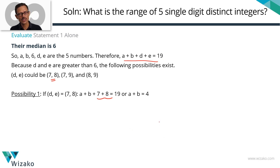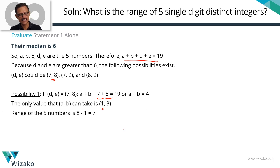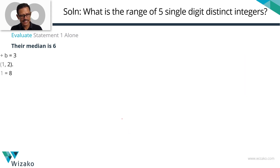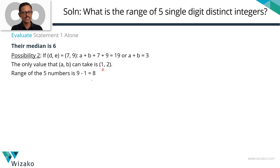Since the total sum is 25 and c + d + e = 21, we get a + b = 4. The only distinct single-digit positive integers that add up to 4 are 1 and 3, so a = 1. Since b = 3, c must be greater than 3, so the least possible value for c is 4. With c = 4, d + e = 17, and the only pair is 8 and 9.